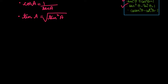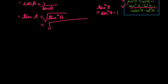Now for tan A: tan A = sin A / cos A = [√(sec²A − 1) / sec A] / [1 / sec A] = √(sec²A − 1). So we have converted tan A in terms of sec A.